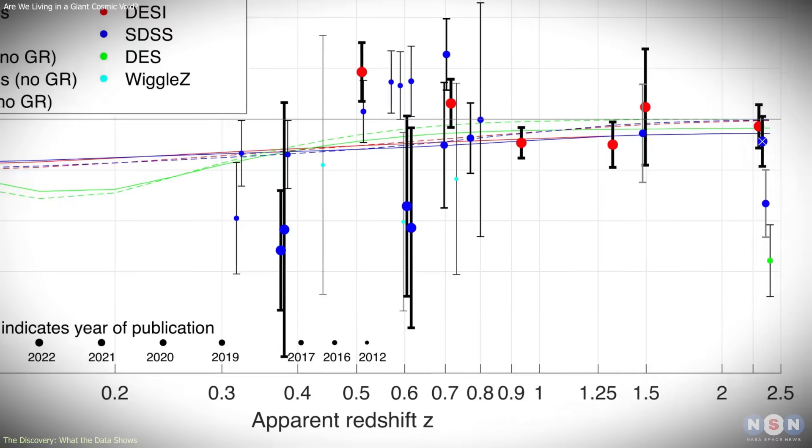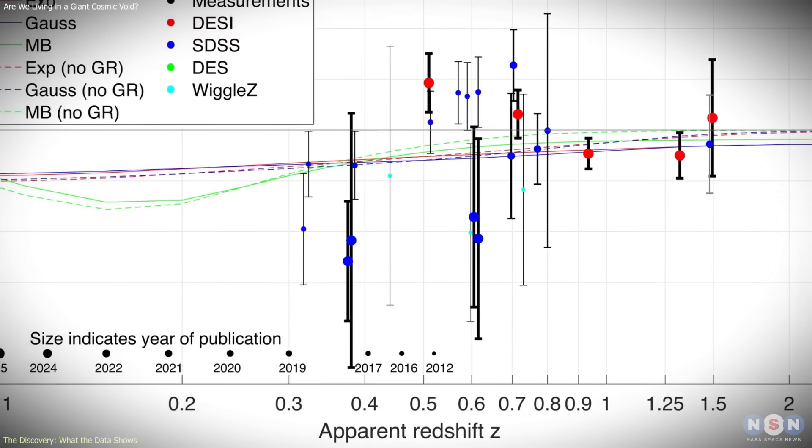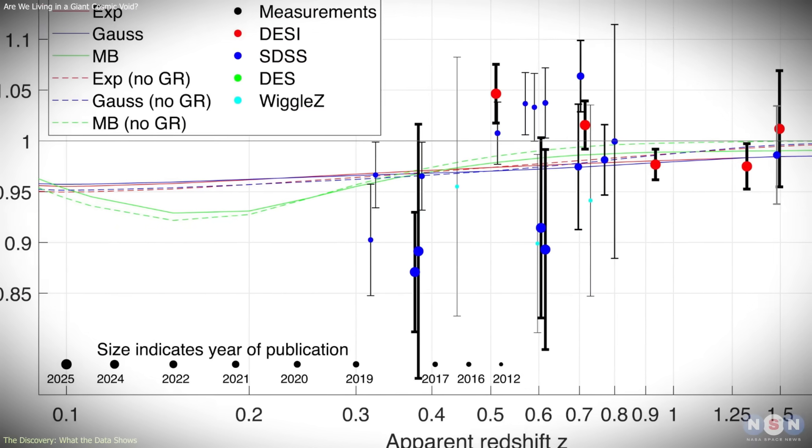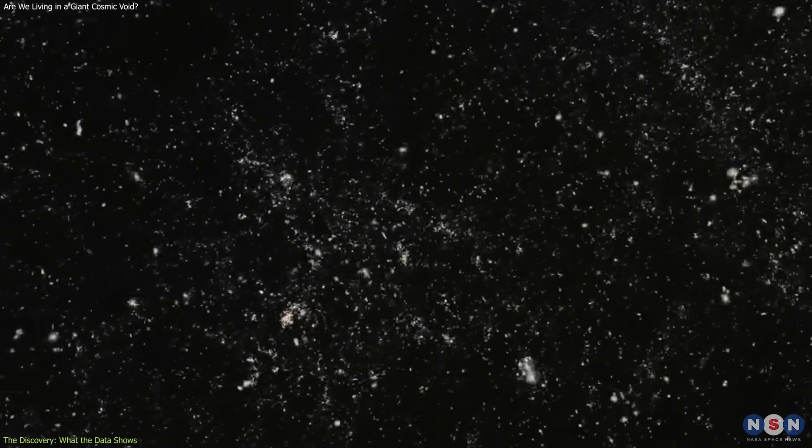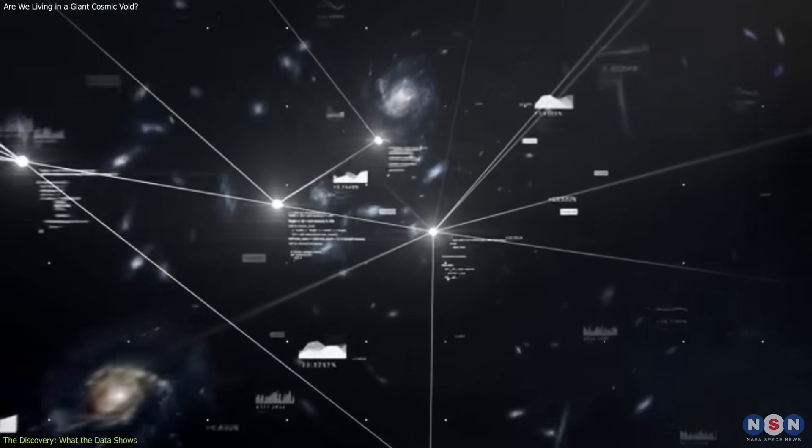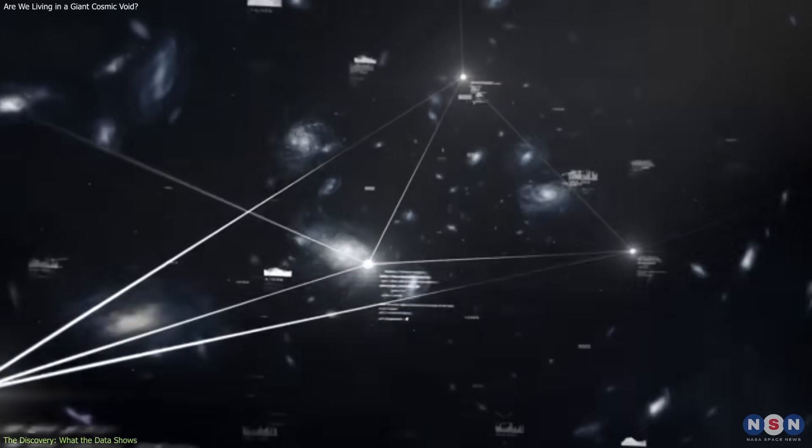Scientists can trace how distances evolve over time and how the universe has expanded since its early stages. In this study, researchers analyzed BAO measurements collected over more than 20 years. The data came from multiple galaxy surveys, each covering different regions of the sky and different cosmic epochs.